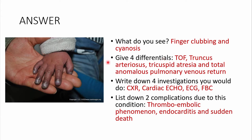Four differentials: most commonly this child may have a cyanotic congenital heart disease. It could be Tetralogy of Fallot, truncus arteriosus, tricuspid atresia, or total anomalous pulmonary venous return. Other conditions that may present with finger clubbing and cyanosis include cystic fibrosis.